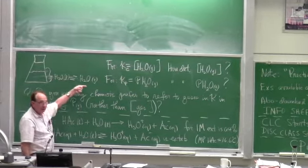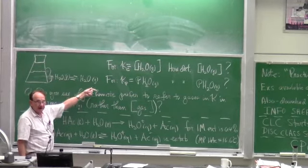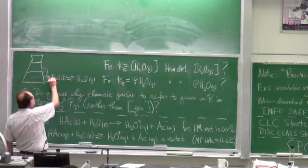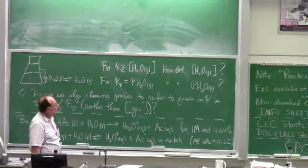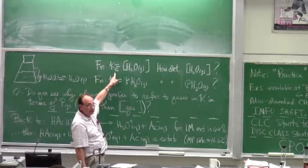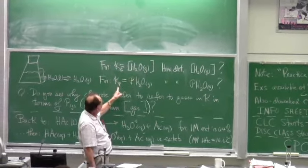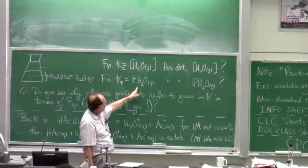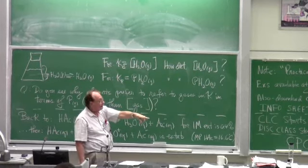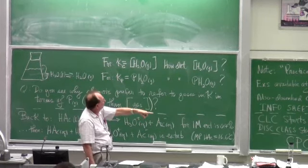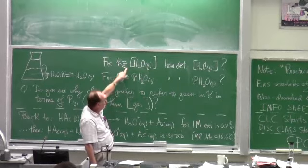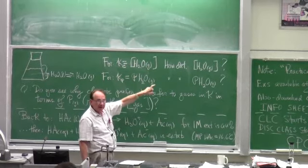As water liquid evaporates, we go this way. As water gas condenses, we go back this way. The equilibrium constant expressed as a function of concentration is this; as a function of partial pressure is this. And I said, if you made this system and wanted to get K as a function of concentration, how would you get it?